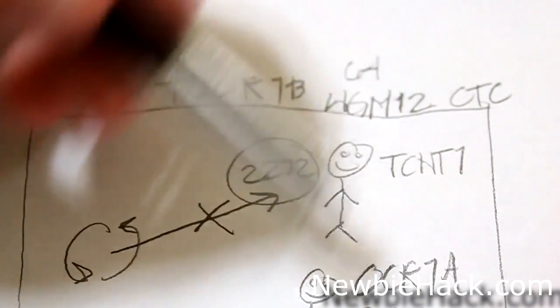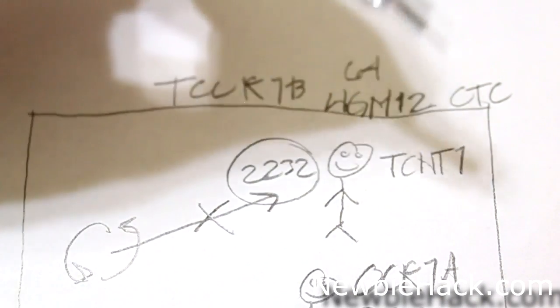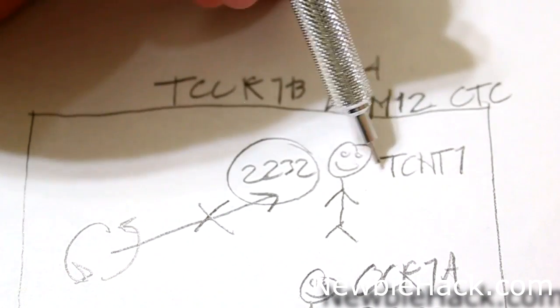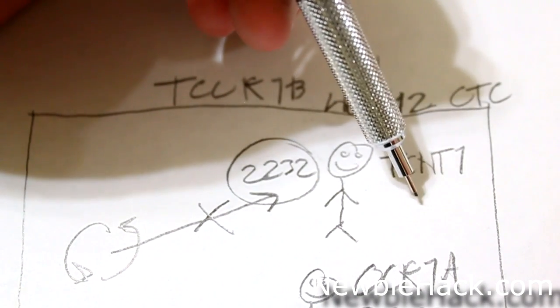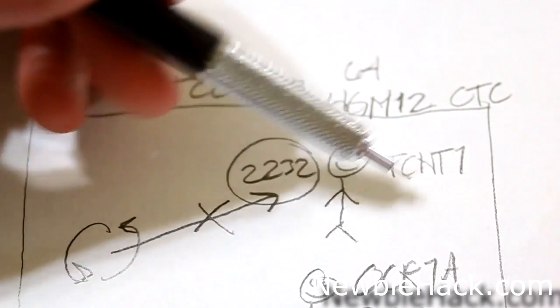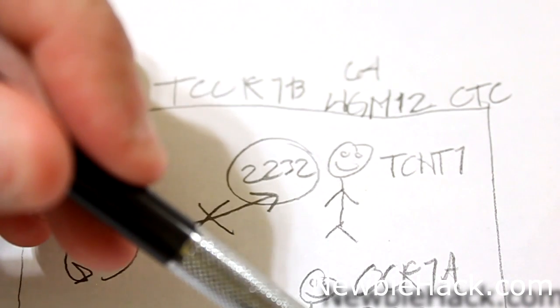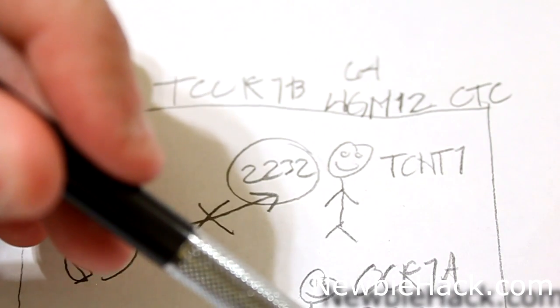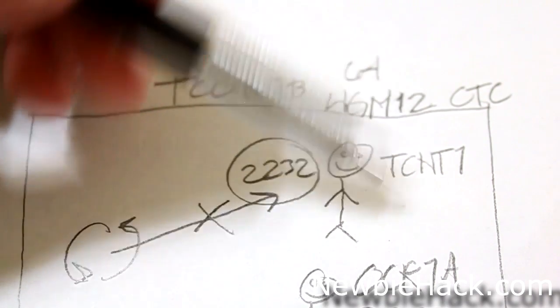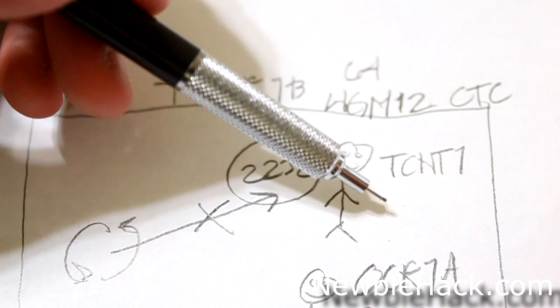And what that means is when it compares to 15624 with OCR1A, then it's going to cause the TCNT1 to become zero again, so it'll keep counting from zero to 15624, zero to 15624, instead of going all the way up to its overflow, which is 65535.